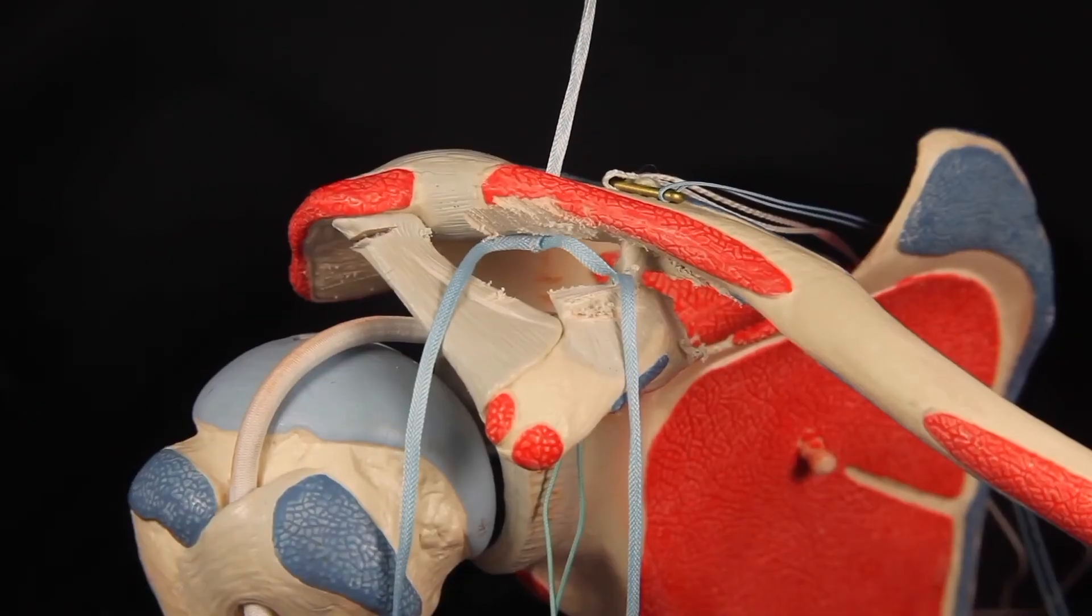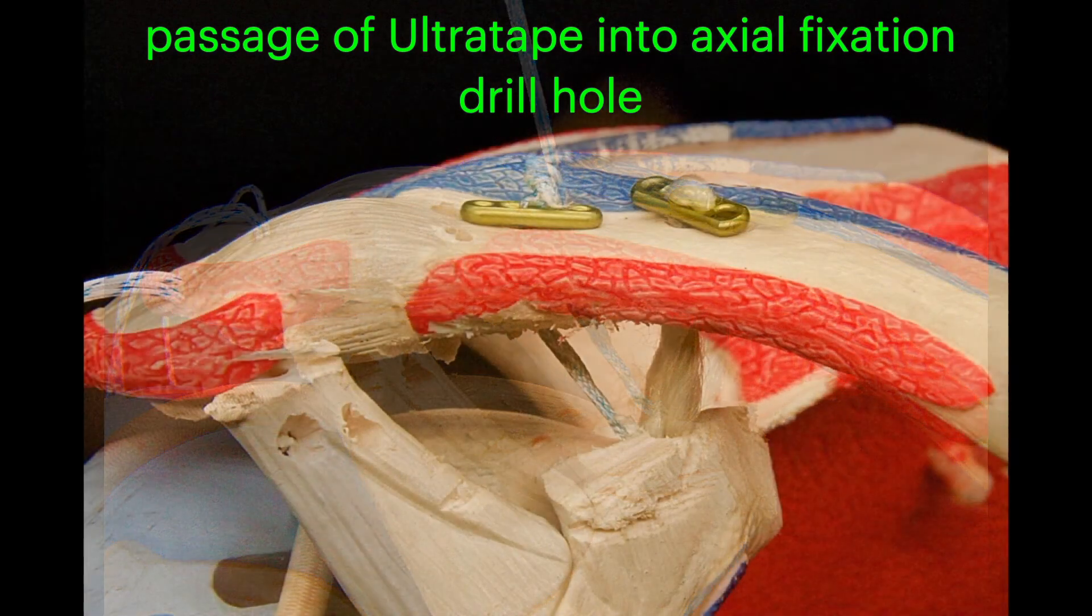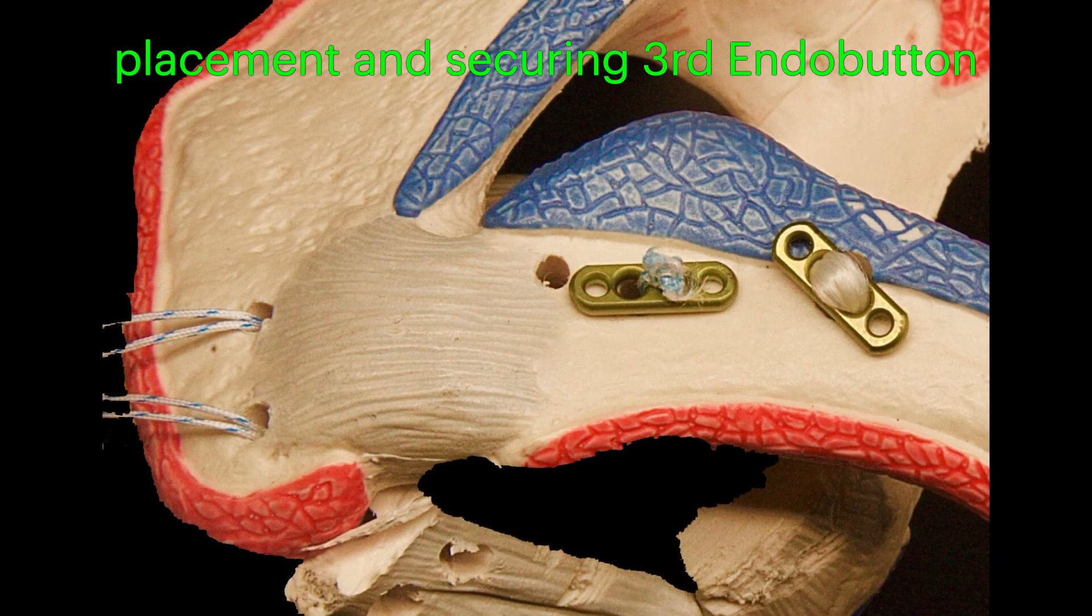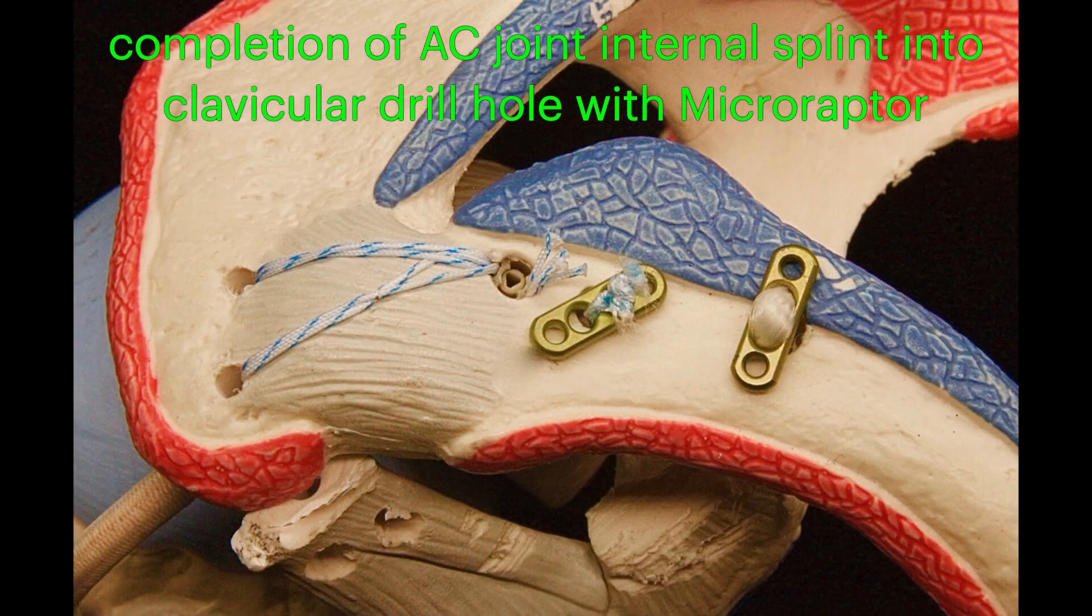The ultra tape limbs are then passed into the second drill hole and tied around the third endobutton. The AC joint internal splint is then completed by passing all four limbs of suture from the acromial cufix anchors into a micro-raptor and inserting and deploying the anchor.